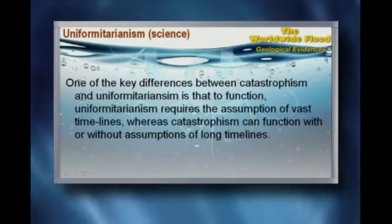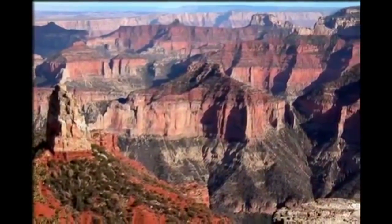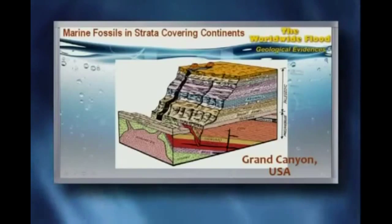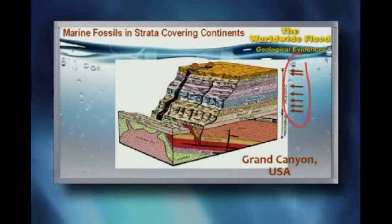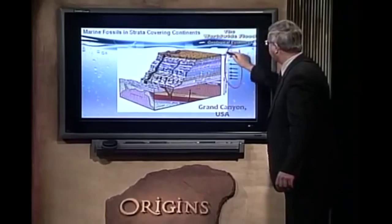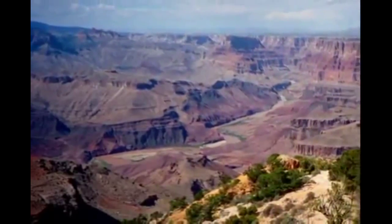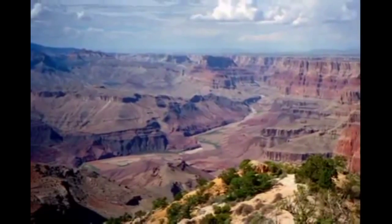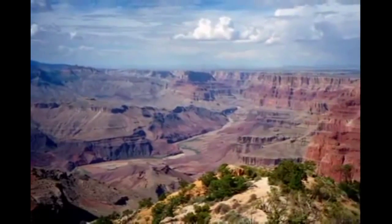Let's go to the Grand Canyon — a well-exposed, well-studied area found in all the textbooks. If we look at all these rock layers through the walls of the Grand Canyon, every one of those rock layers arrowed right to the top has marine fossils in them. Now, the top of the Grand Canyon is over a mile above sea level. So how did marine fossils — creatures that live in the ocean — get up on top of the continent at that elevation? It means the ocean waters must have flowed over the continents.